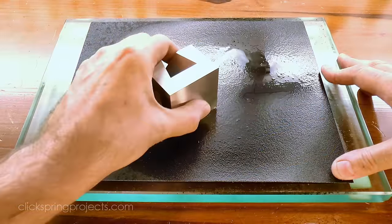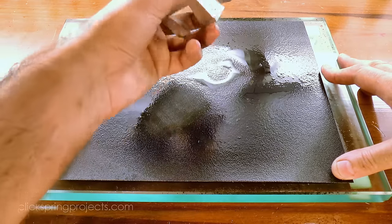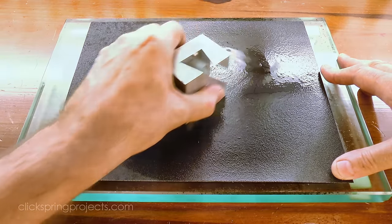A gentle rub with some 120 grit paper knocked down that burr, leaving the first part of the puzzle in good shape for now.